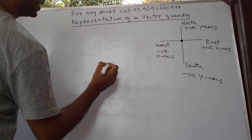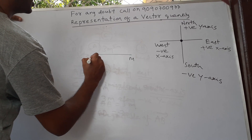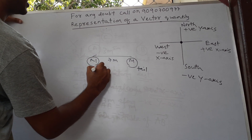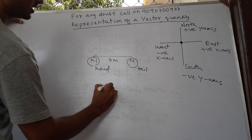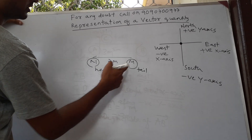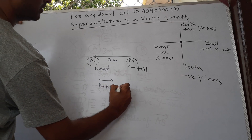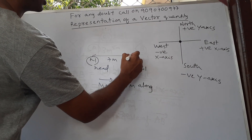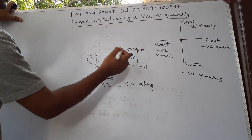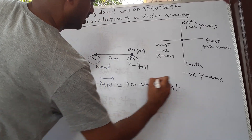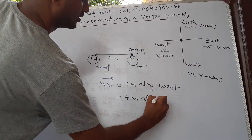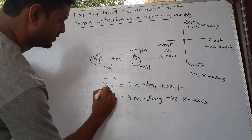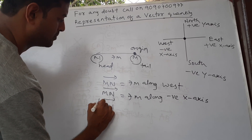Now let's look at another example: vector MN, where the length is 7 meters. M is the tail and N is the head, so I write vector MN. If I put my origin at M, the vector is directed along west — 7 meters along west — or I can write 7 meters along negative x-axis.